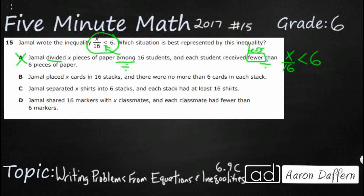Jamal placed x cards in 16 stacks, so we're going to do the same thing here — x over 16. And there were no more than 6 cards in each stack. So we've got the 6, and 'no more than' means we can have 6 — it's going to be 6 or less, less than or equal to. So it looks like B might be what we need. The language is slightly different, but 'no more than 6' means it can be 6, it just can't be more — which means less than or equal to 6. So I'm thinking it's B. Let's double check with C and D.